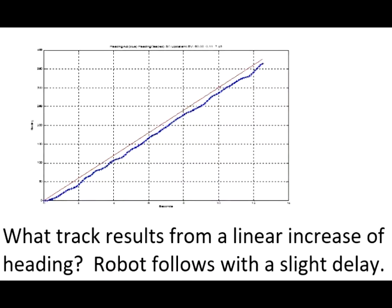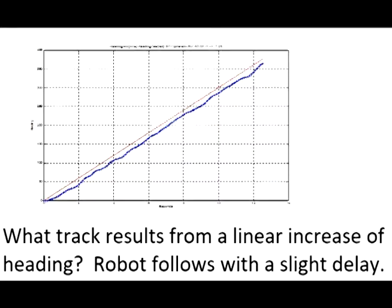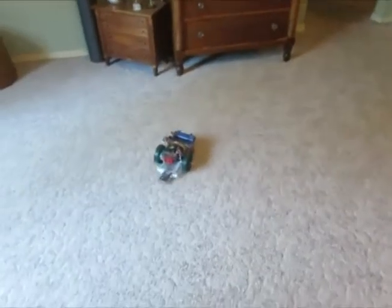Now I have a puzzle for you. In the upcoming trial, each command requests a heading change of an additional three degrees. The result is a linear change in actual heading. So, what's the path of the robot? This time we're doing a circle. The linear change is a function of time.